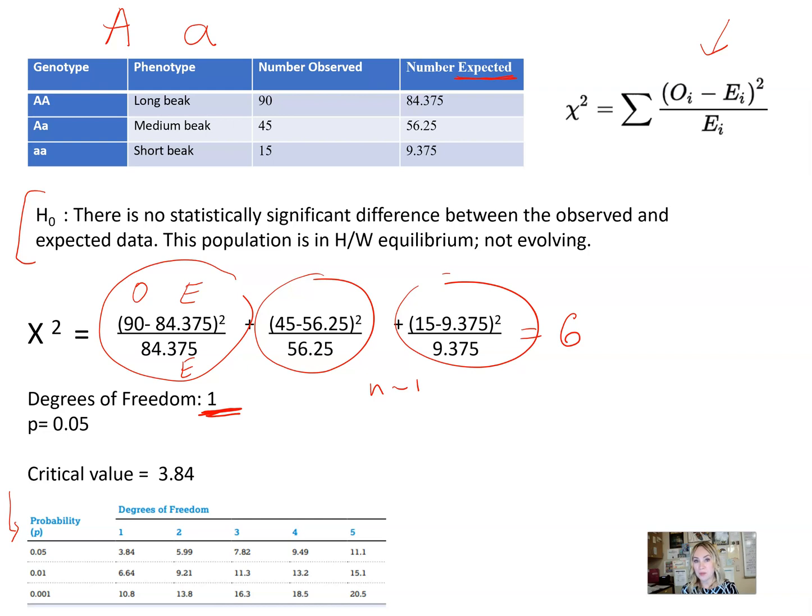We have one degree of freedom and then we're going to select our p-value, probability of making an error. Five percent is going to be an acceptable value. We'll look it up in the table—we have 0.05, one degree of freedom, and here's our critical value. Now we're going to compare our calculated chi-square value to the critical value and draw the conclusion.